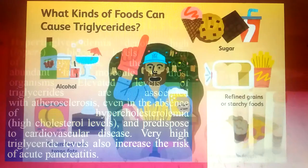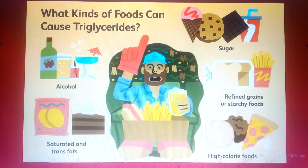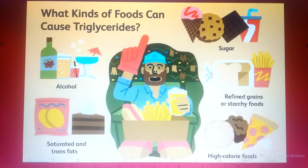What kinds of food can cause hypertriglyceridemia? Alcohol, saturated and trans fats, sugars, refined grains, starchy foods, and high-calorie foods — these are all the causes of hypertriglyceridemia.